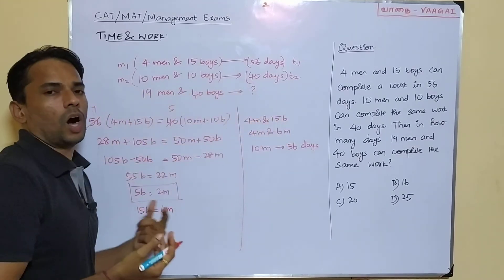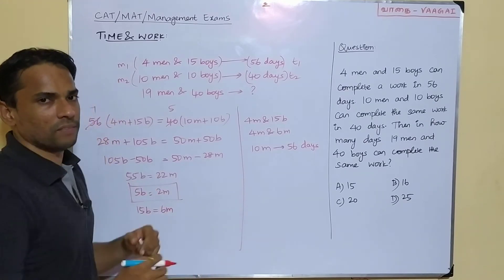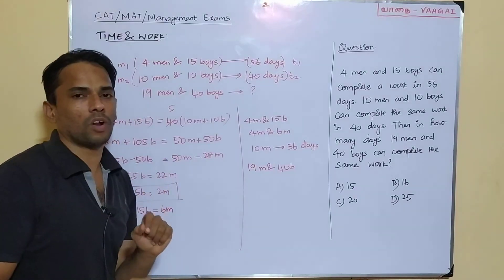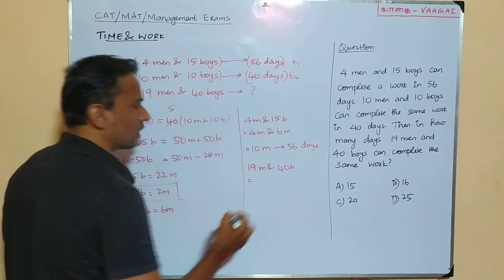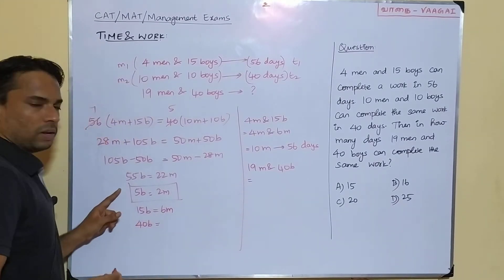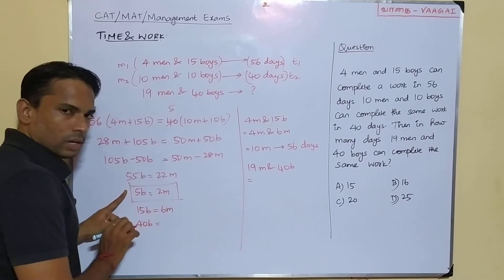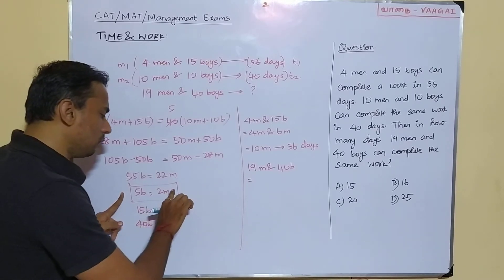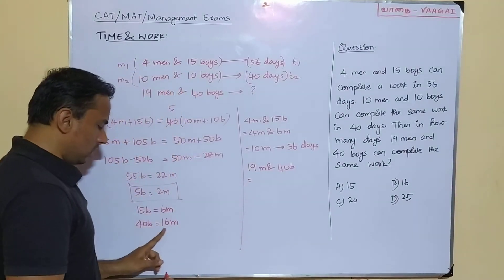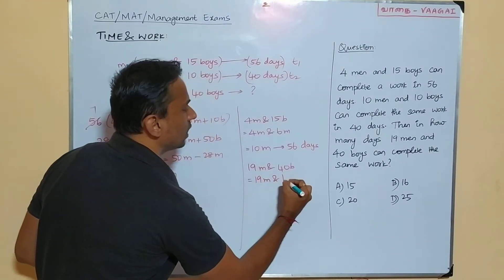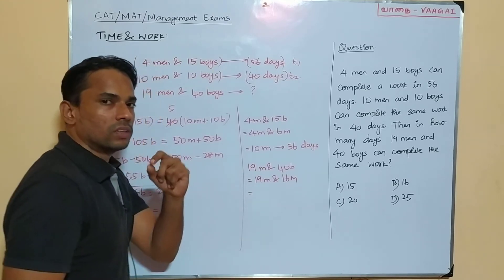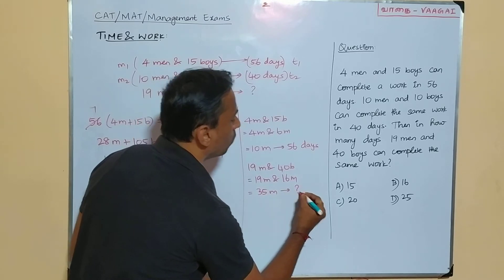Now for the question: 19 men and 40 boys. We convert 40 boys to men using 5b = 2m. Comparing 5 and 40: it is 8 times, so 2 × 8 = 16 men. So 40 boys = 16 men. The total is 19 men + 16 men = 35 men. So 35 men will complete the work in how many days? That is the question.